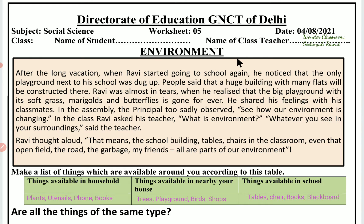Environment means what is around us — we are around the world. So let's start reading. After the long vacation, when Ravi started going to school again, he noticed that the only playground next to his school was dug up — one playground was gone.